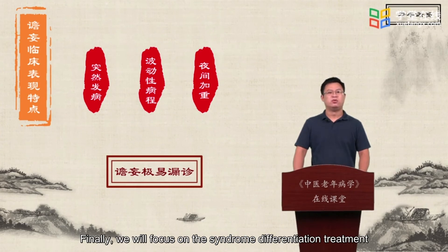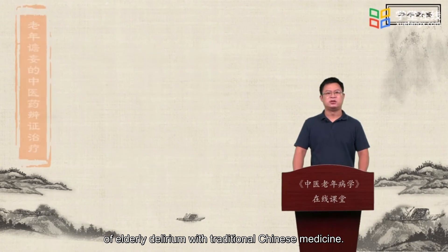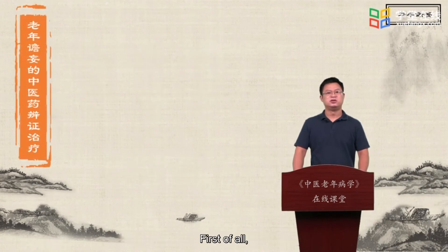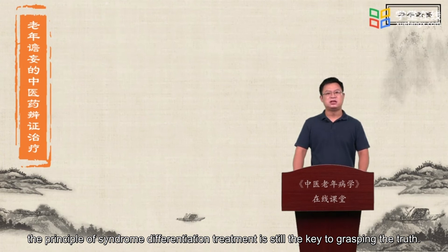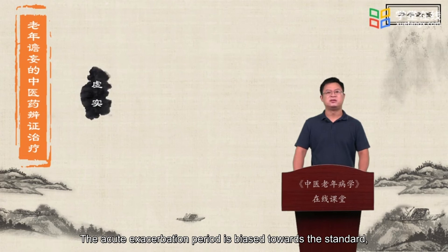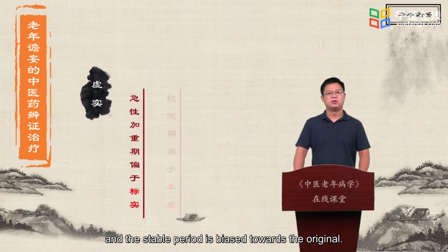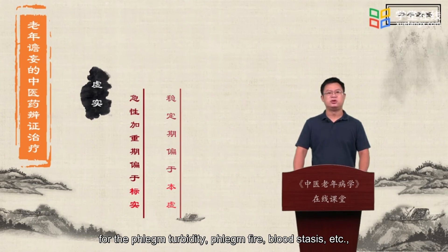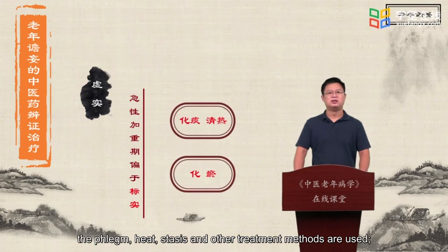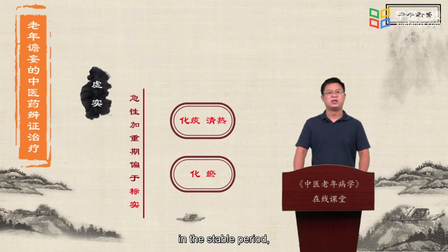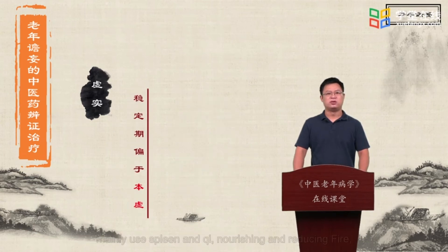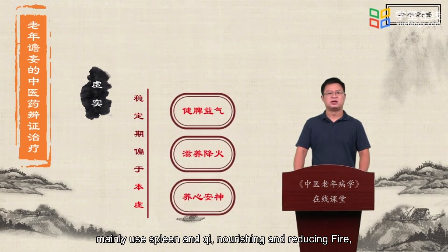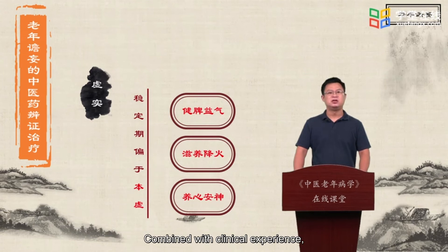Finally, we will focus on the syndrome differentiation treatment of elderly delirium with traditional Chinese medicine. The principle of syndrome differentiation treatment is to grasp the truth — the acute exacerbation period is biased towards the standard, and the stable period is biased towards the original. In the acute exacerbation period, for phlegm turbidity, phlegm fire, blood stasis, etc., phlegm, heat, and stasis treatment methods are used. In the stable period, those partial to original deficiency mainly use spleen and qi, nourishing and reducing fire, and nourishing the mind.